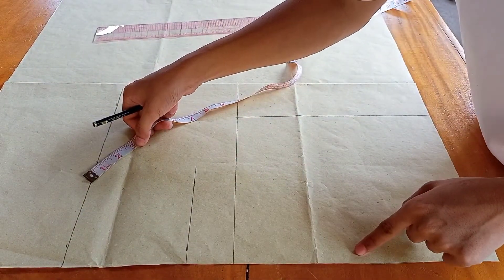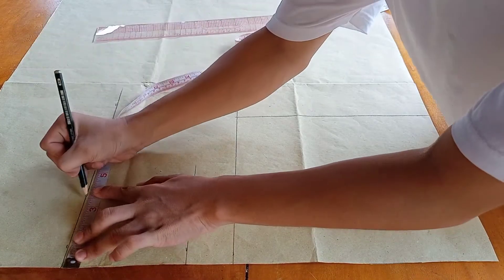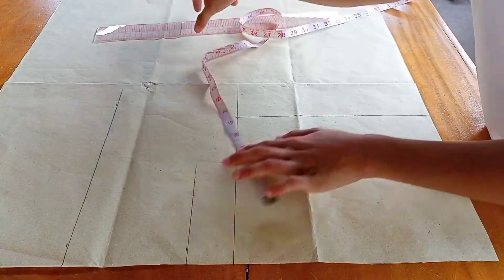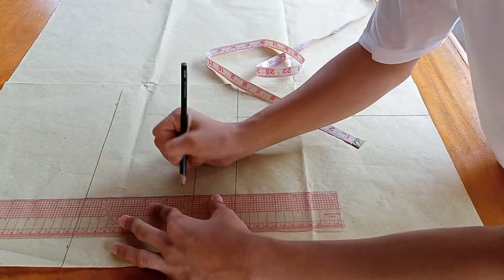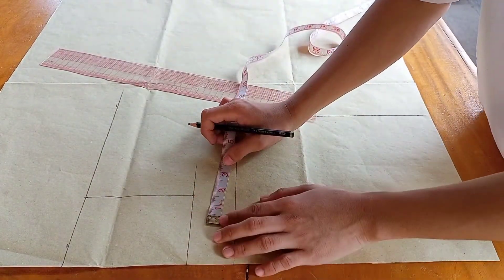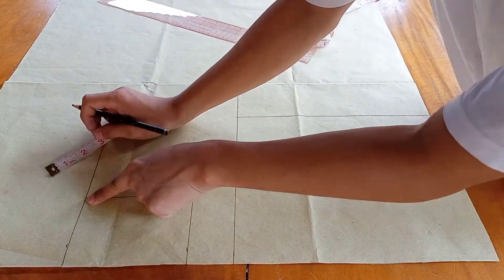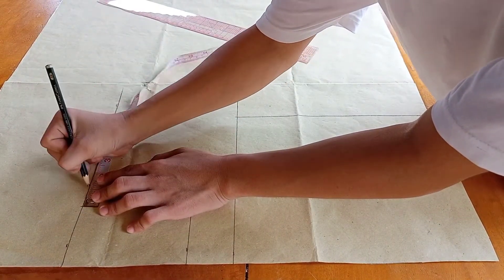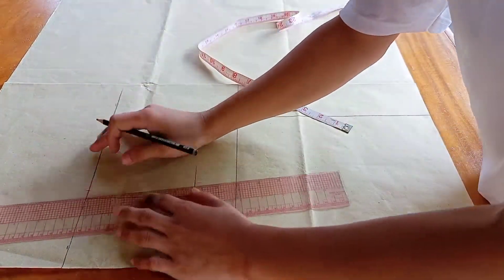This is the center fold of your skirt. Measure 3 and a half inches forward. Connect the points to create a straight line. From this straight line, measure 1 inch in between. Connect the points to create the dart intake.